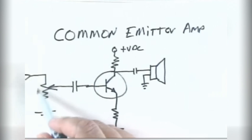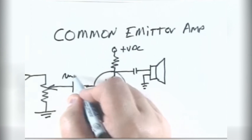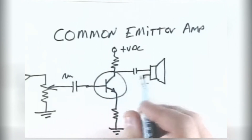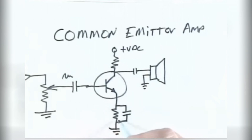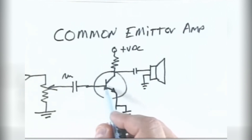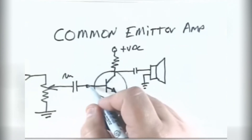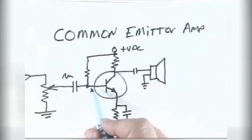The capacitor is here to decouple DC but pass AC, so we still have our signal, and we're feeding it to the base of this transistor. This is an NPN transistor. Sometimes we put a little capacitor on this biasing resistor at the bottom of the emitter to allow the signal to amplify better. To bias the base of the transistor, we put a resistor here connected to positive voltage and a resistor here connected to ground.